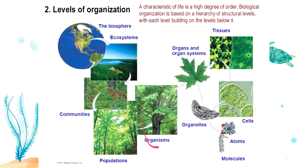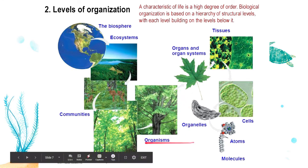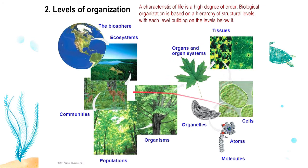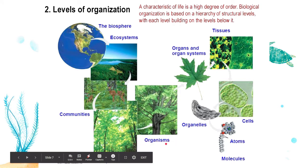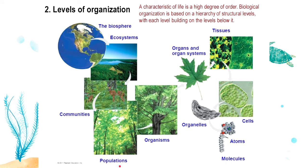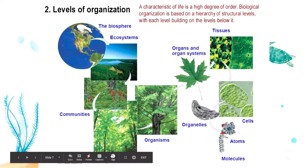Organ systems can build up an organism — a single individual. You and I are organisms because we have organs and organ systems. Organisms of the same species that live together in a certain habitat are called a population. A species is a group of organisms so closely related that they can interbreed and produce fertile offspring.